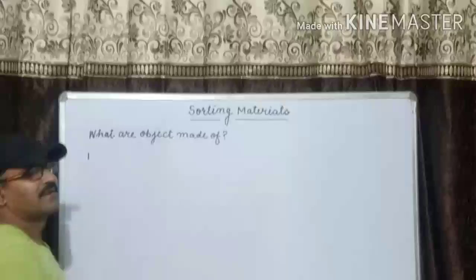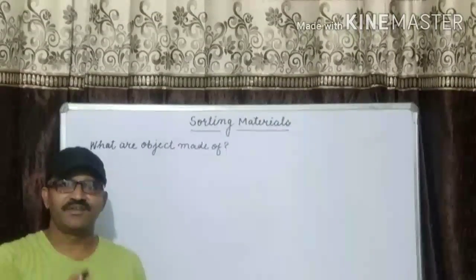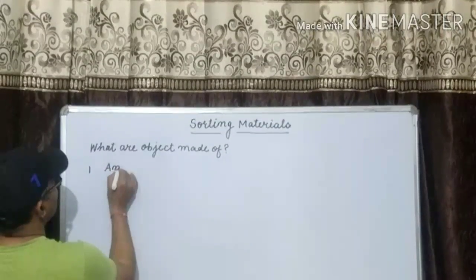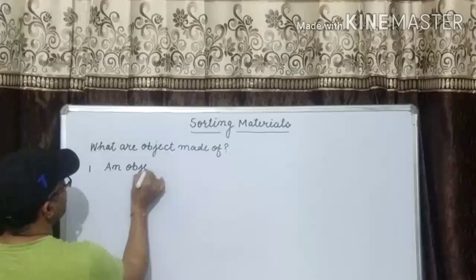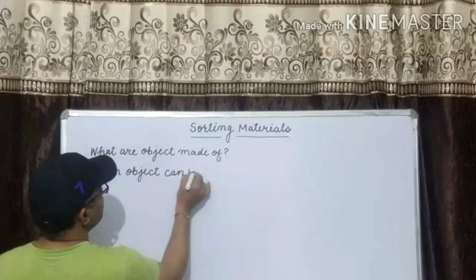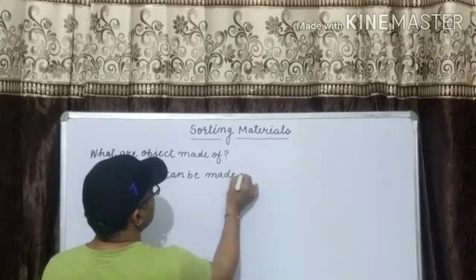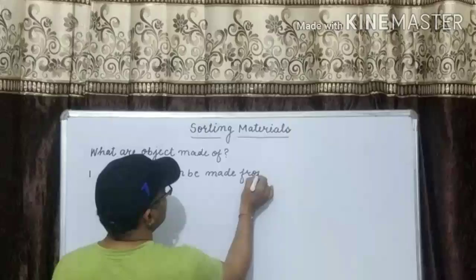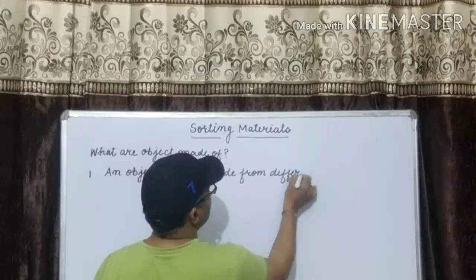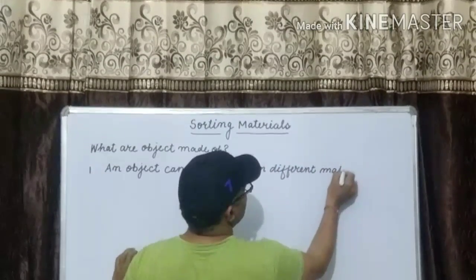Number one: an object can be made from different materials. Number two: an object can be made from other objects.